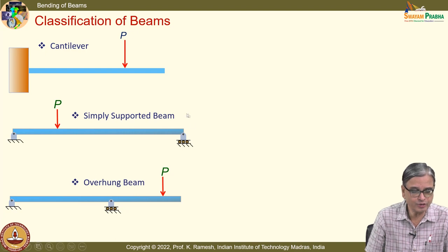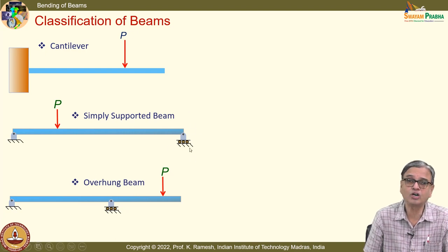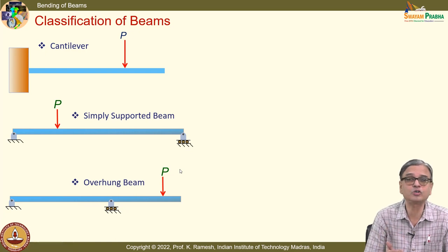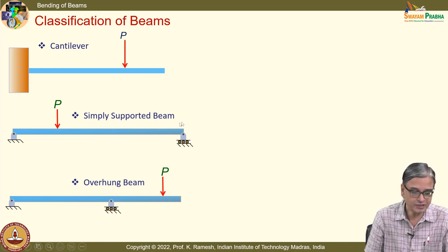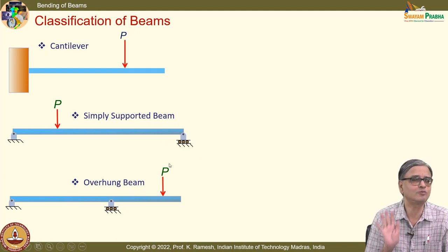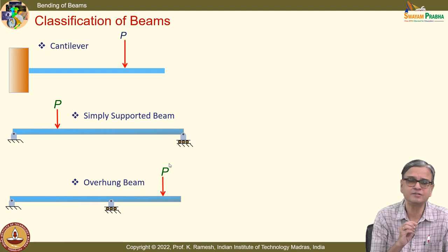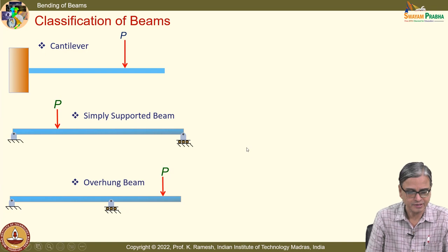We have also looked at why you have a roller support — not just to simplify your mathematics, it is also useful because you cannot avoid temperature changes. When there is a temperature change, one way of mitigating that effect is: if it is possible to allow expansion in your design, allow that. Do not generate stresses due to thermal effects — that is one simplest way of handling thermal effects.